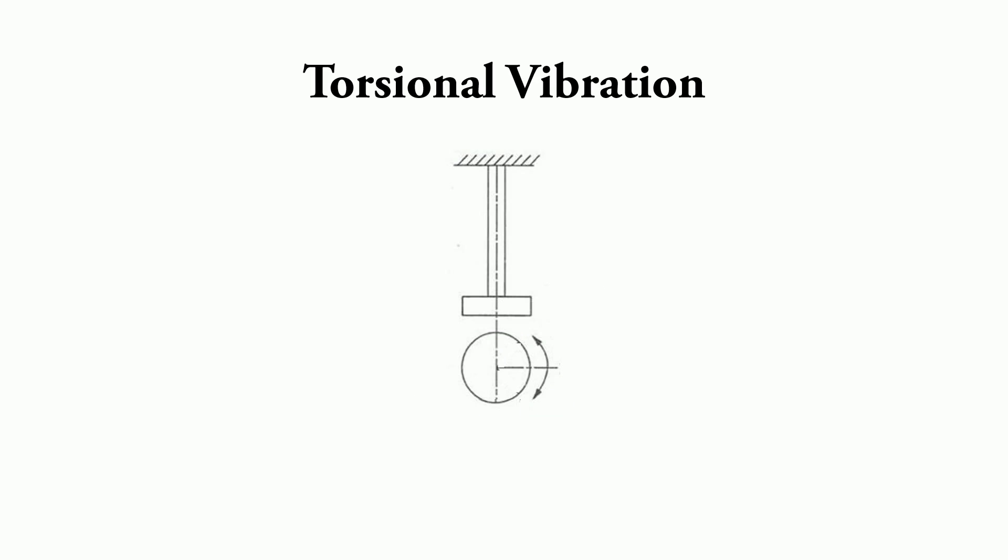Torsional vibration. If the spindle gets alternately twisted and untwisted on account of vibratory motion of the suspended disc, it is known as torsional vibration.